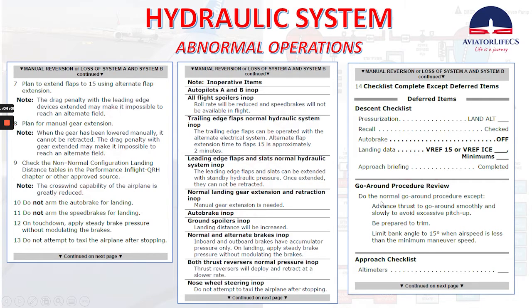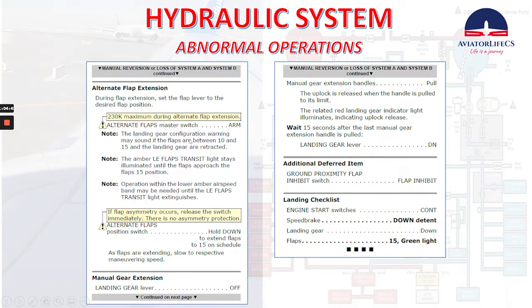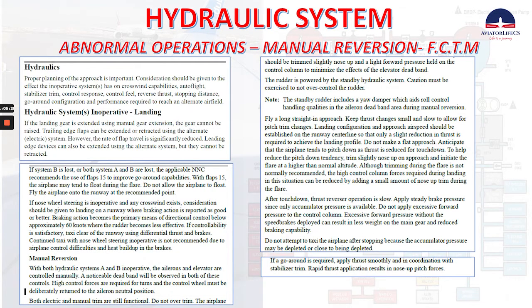Go around procedure review: do the normal go around procedure except advance thrust to go around smoothly and slowly to avoid excessive pitch up. Be prepared to trim. Limit bank angle to 15 degrees when airspeed is less than the minimum maneuver speed. Then complete the approach checklist and proceed again with alternate flap extension and manual gear extension. Additional deferred items: ground proximity flap inhibit switch — flap inhibit. Landing checklist: speed brakes down, flaps 15 with green light.